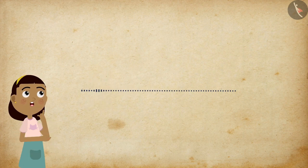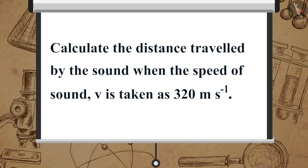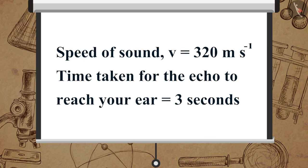Even the material of the seats is chosen on the basis of their sound-absorbing properties. Now, let us solve a simple problem together. Suppose you clapped your hands near a cliff and heard the sound after 3 seconds. Calculate the distance travelled by the sound when the speed of sound, V, is taken as 320 meters per second. Here, speed of sound V is equal to 320 meters per second, and the time taken for the echo to reach your ear is equal to 3 seconds.